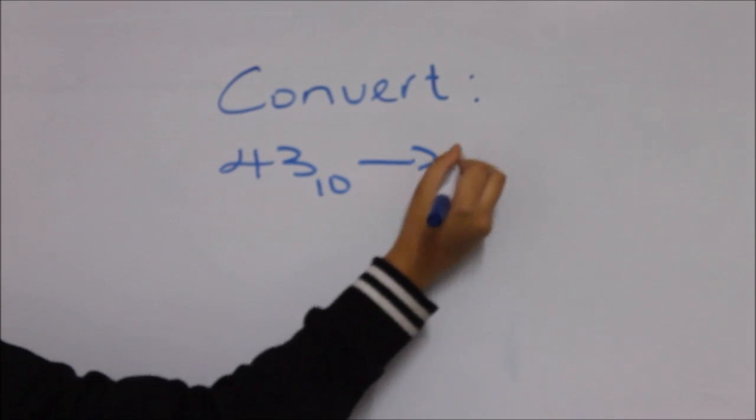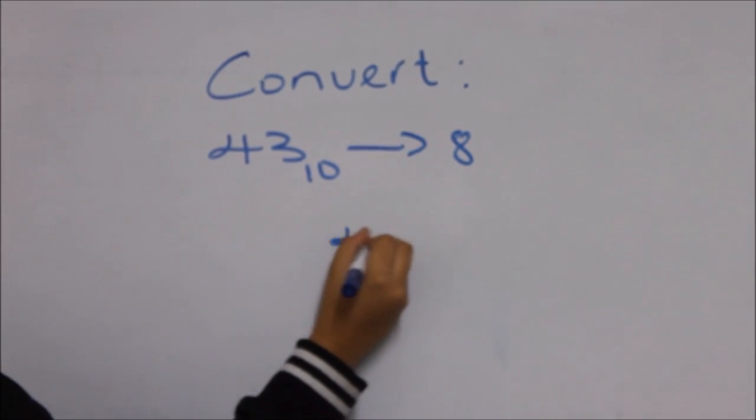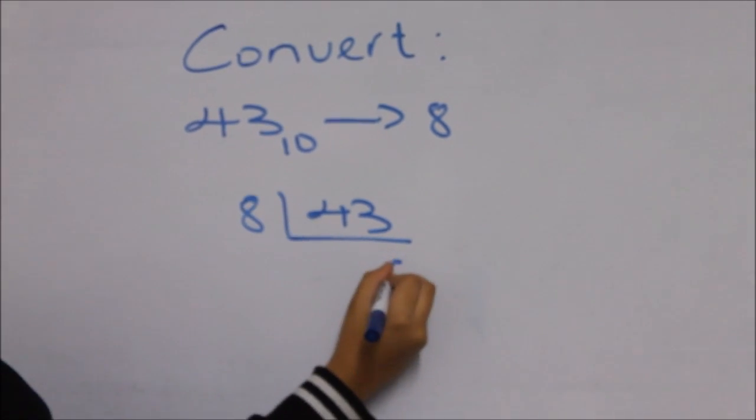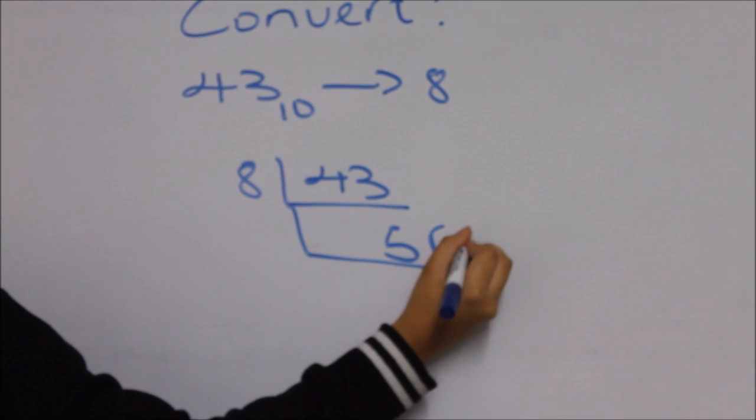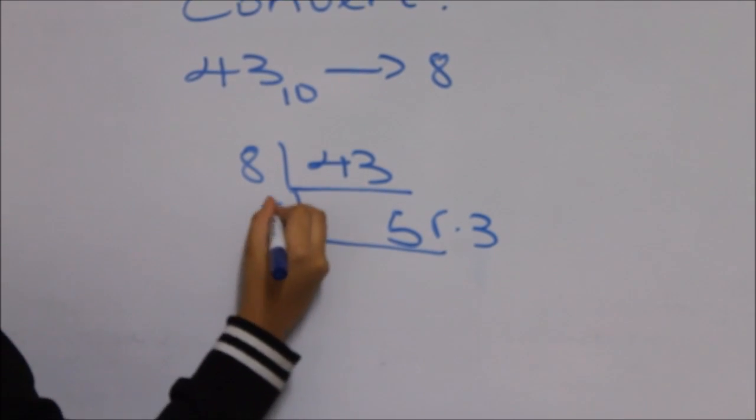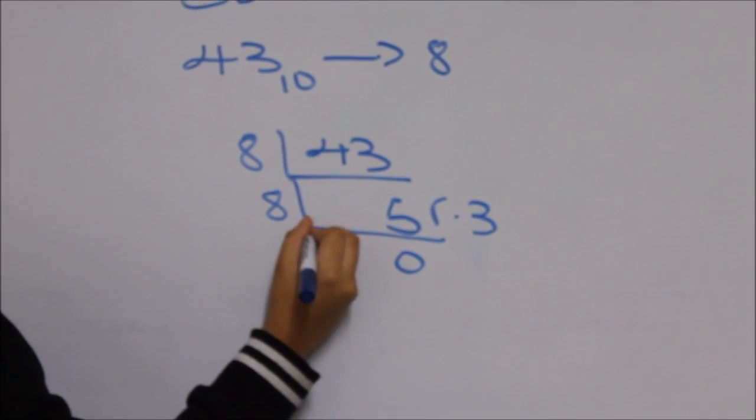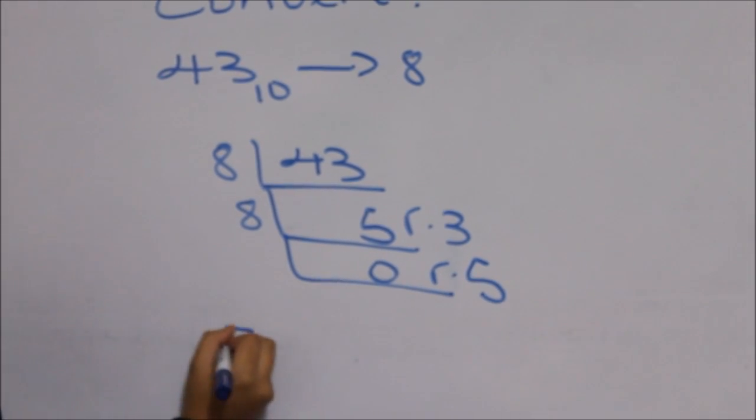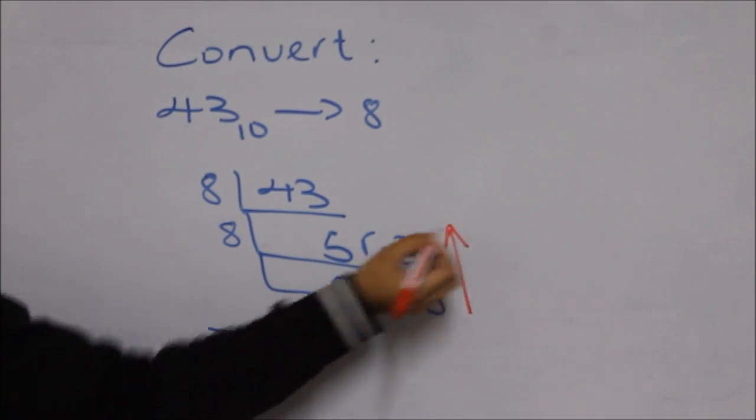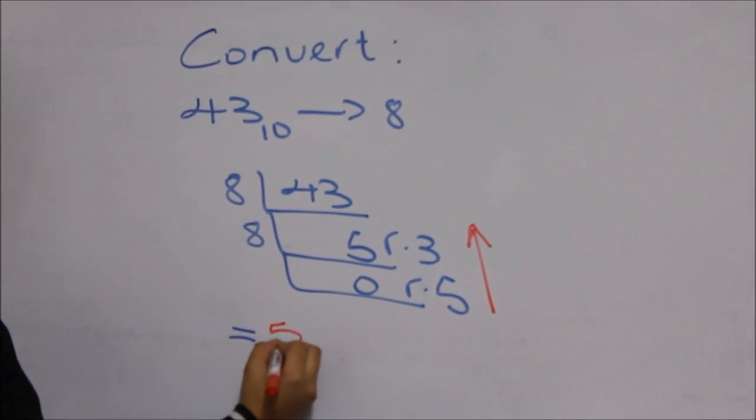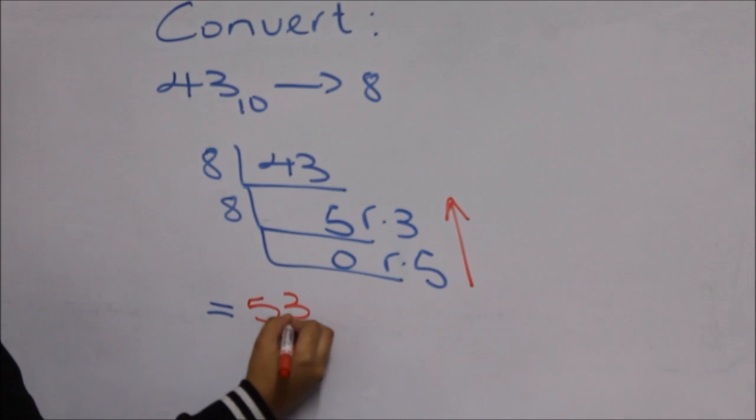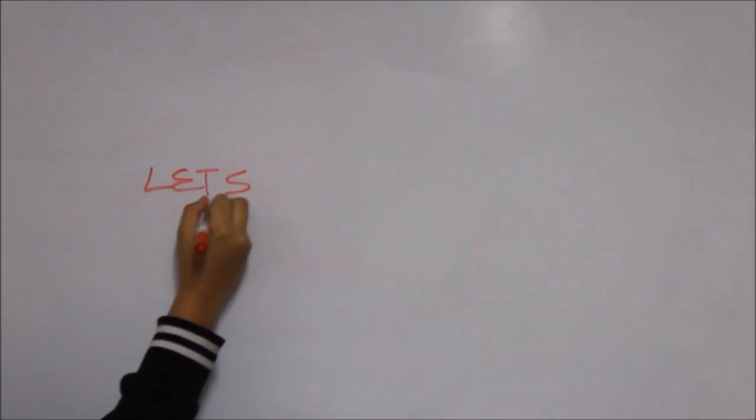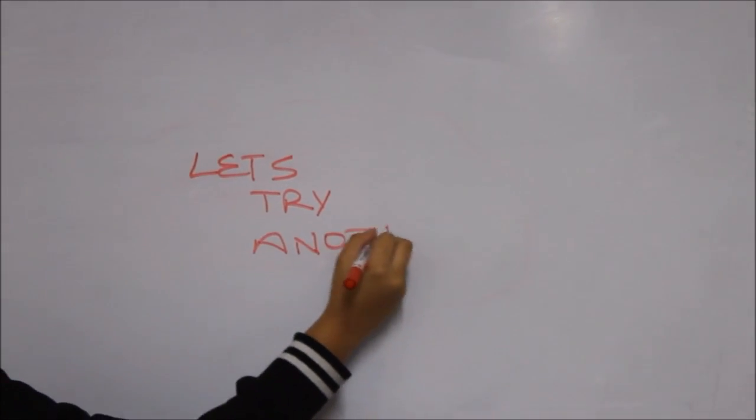Example 1: Convert 43 base 10 to base 8. Do the long division: dividing 43 by 8, you will get 5 remainder 3. Write the remainder. Now divide the 5 by 8. It is not possible and you get 0 remainder 5. Read the remainders going upwards and don't forget the subscript. The answer is 53 base 8.